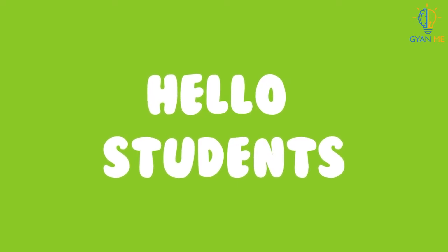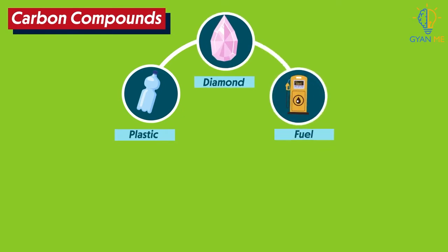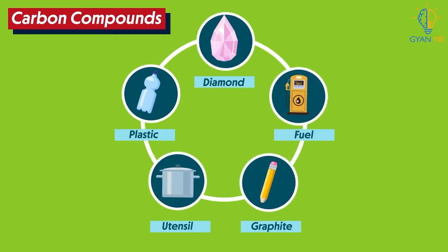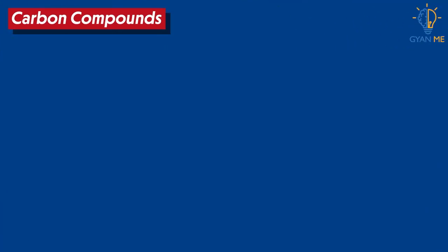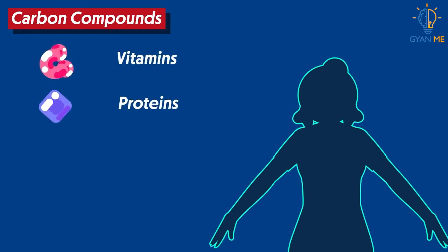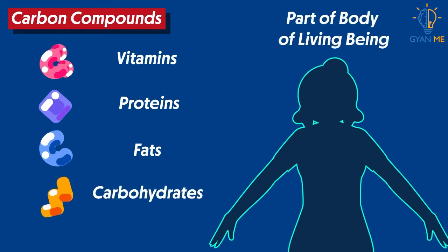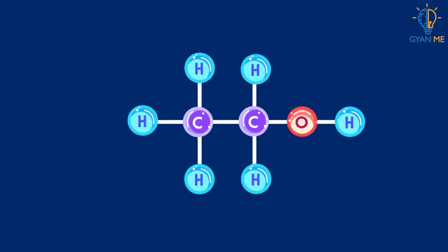As we learnt at the beginning of the chapter, almost everything around us is made up of carbon compounds — and they even form our bodies. Many complex carbon compounds like vitamins, proteins, fats, carbohydrates, etc. constitute our body. Thus, carbon compounds are invaluable and inevitable to us. In this video, we shall study one very important carbon compound: ethanol.